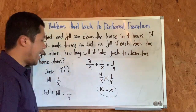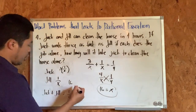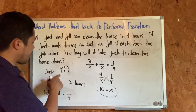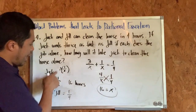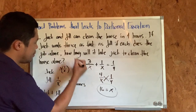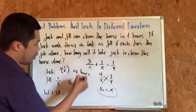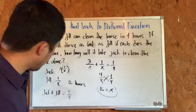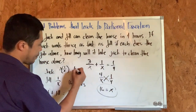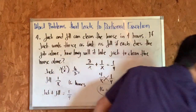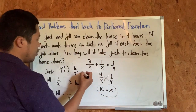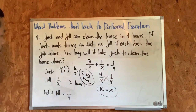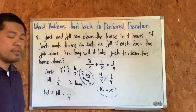Now, x equals 16 is the number of hours it takes Jill to clean the house alone — not Jack. Since Jack is three times faster, we divide 16 by 3, not multiply. Multiplying would give 48 hours, which doesn't make sense since Jack is faster. So 16 divided by 3 equals approximately 5.33 hours. That's how long it takes Jack to clean the house alone — which makes sense, as it's less than the 16 hours for Jill.